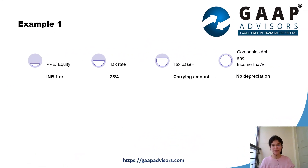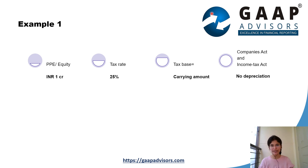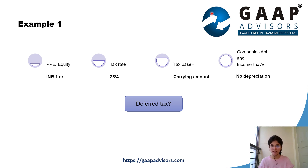Let's begin with our first example. A newly formed company has only one item of property, plant and equipment in its balance sheet. The said item is neither depreciable under the Companies Act 2013 nor under the Income Tax Act 1961. Ind AS 12 states that the tax base of an asset is the amount that will be deductible for tax purposes against any taxable economic benefits that will flow to an entity when it recovers the carrying amount of the asset. Assuming no such amount is deductible for tax purposes in this case, the tax base is same as the accounting base.